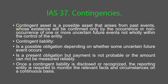Contingencies. A contingent asset is a possible asset that arises from past events whose existence will be confirmed only by the occurrence or non-occurrence of one or more uncertain future events not wholly within the control of the entity. A contingent liability is a possible obligation depending on whether some uncertain future event occurs — it is a present obligation but payment is not probable, or the amount cannot be measured reliably. Once a contingent liability is disclosed or recognized, the reporting entity is required to monitor the relevant facts and circumstances on a continuous basis.